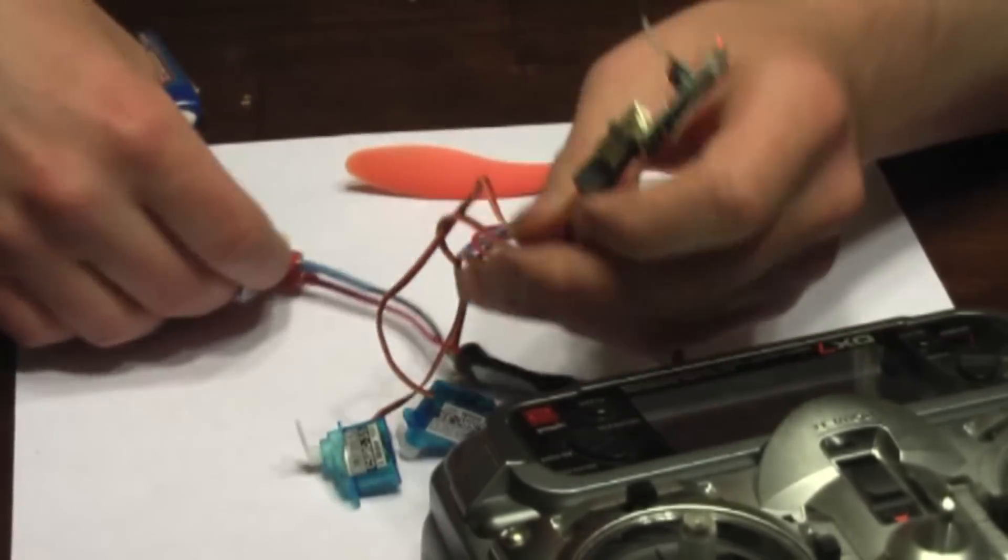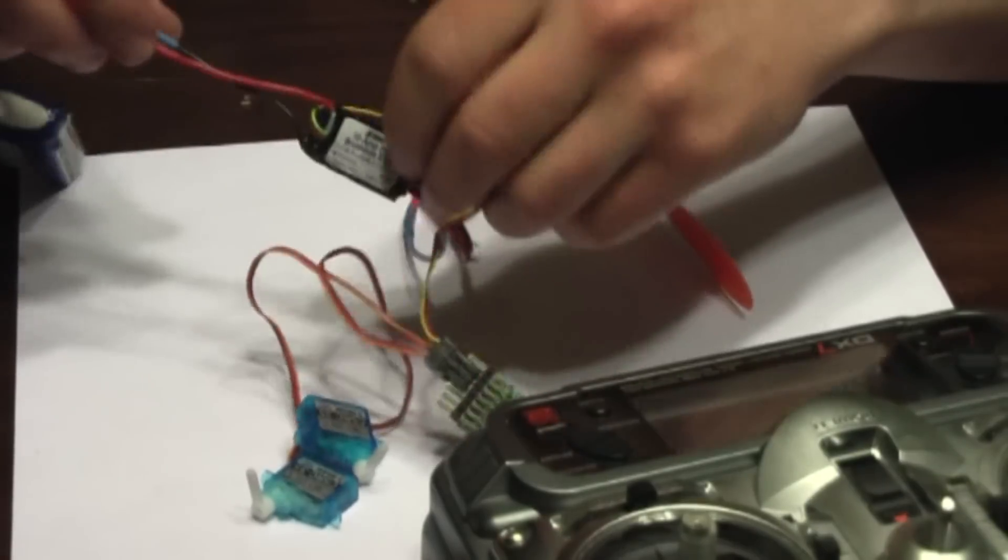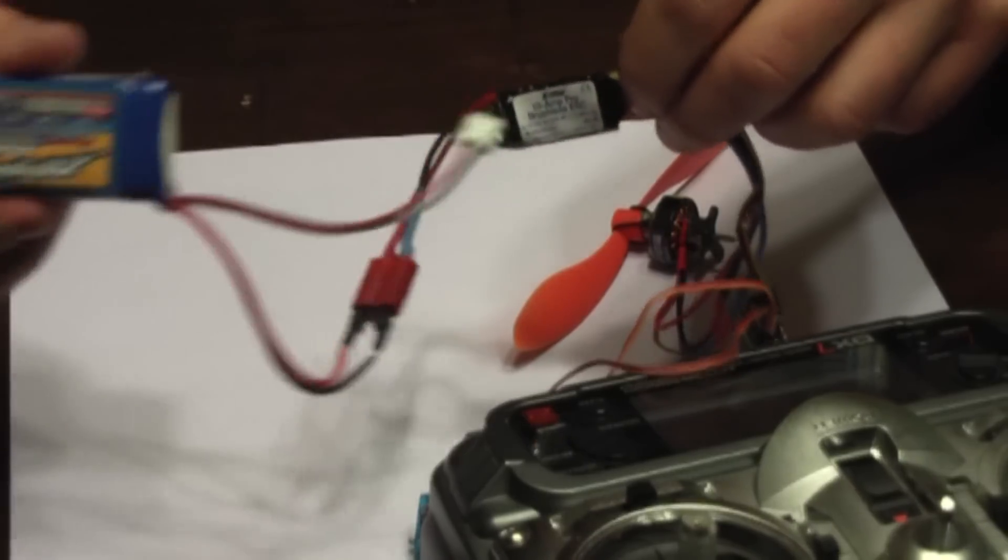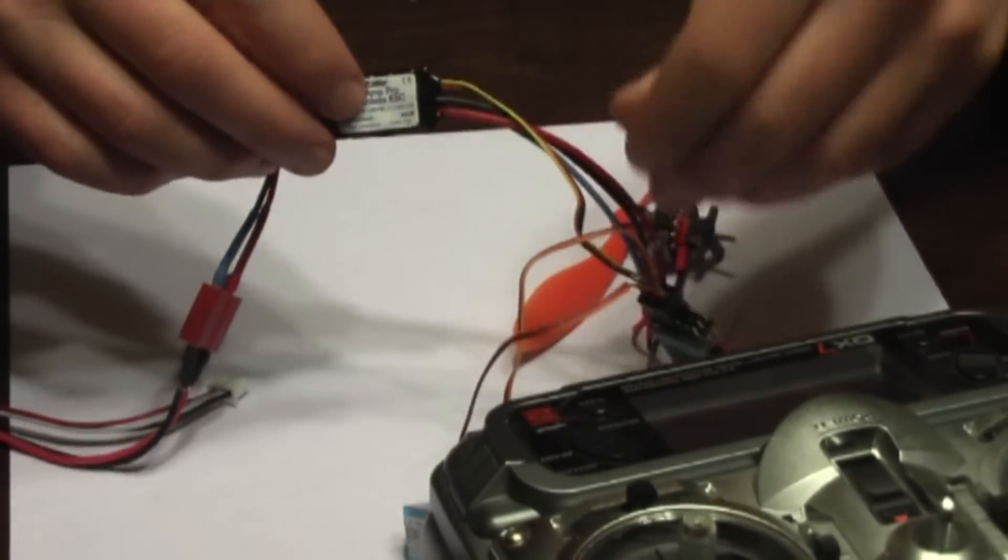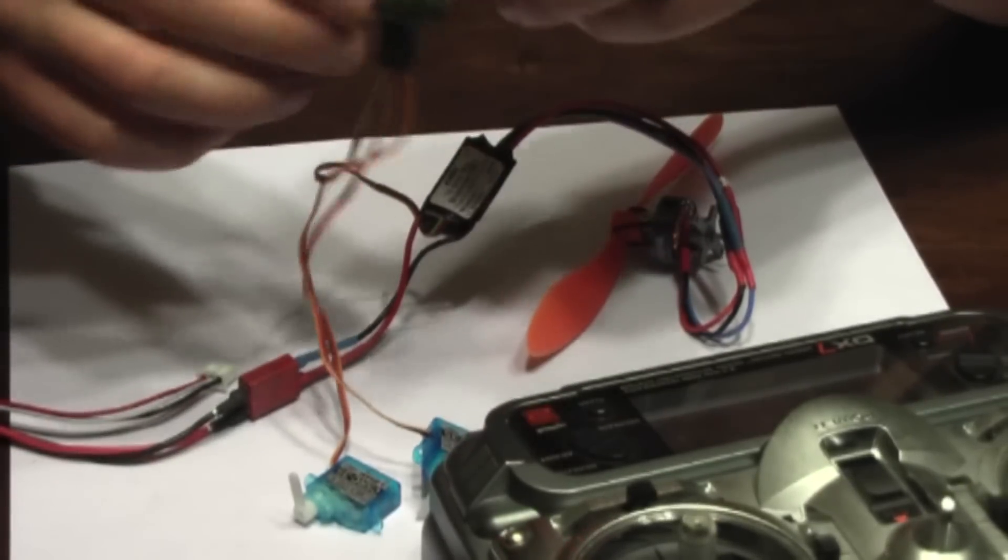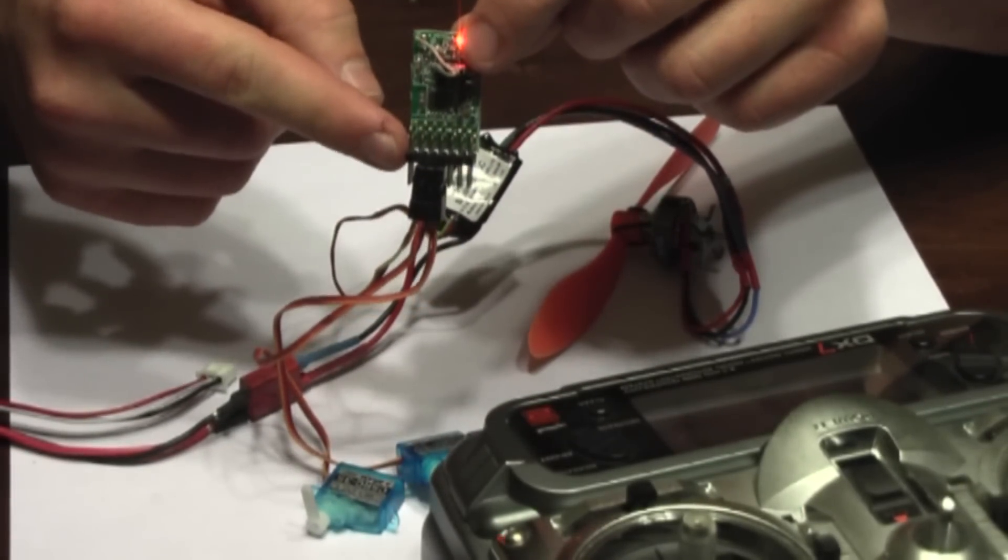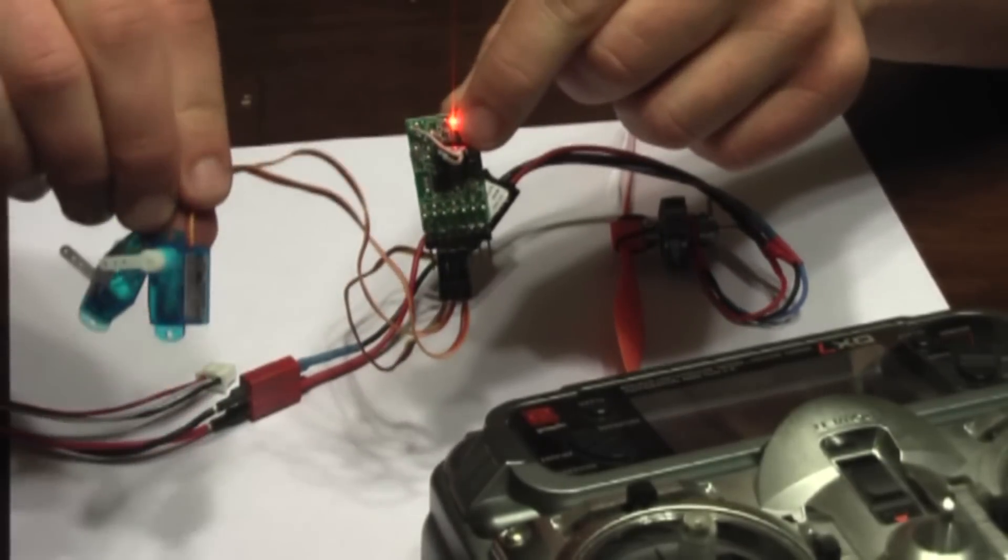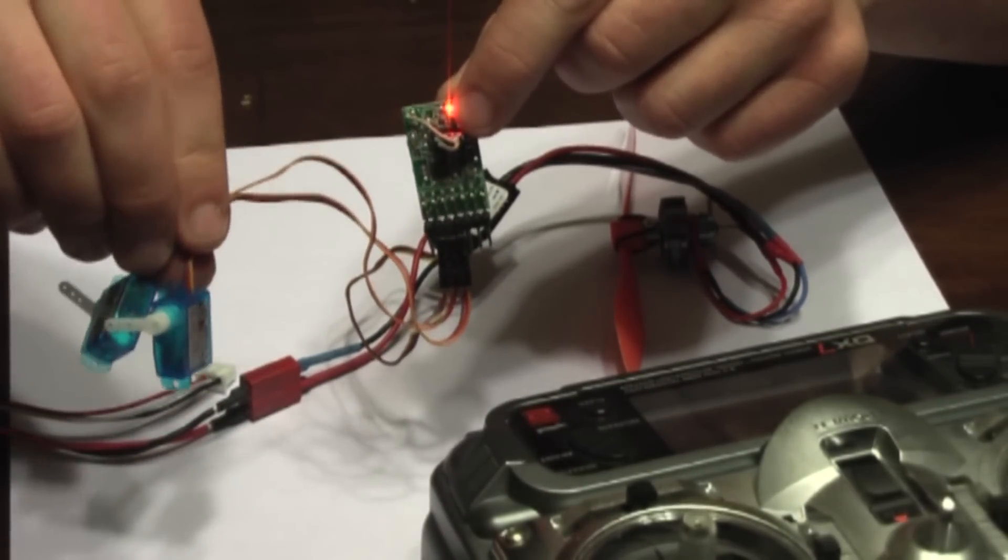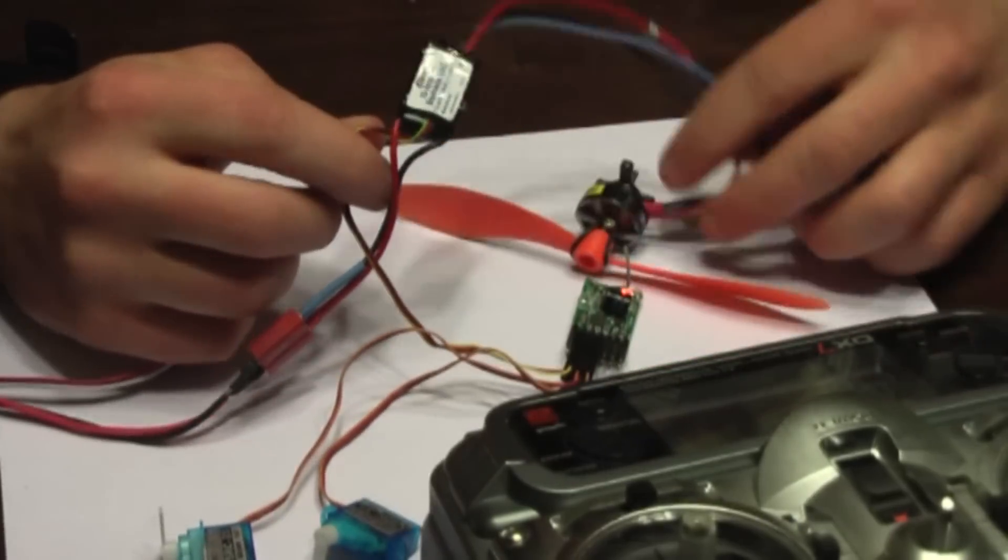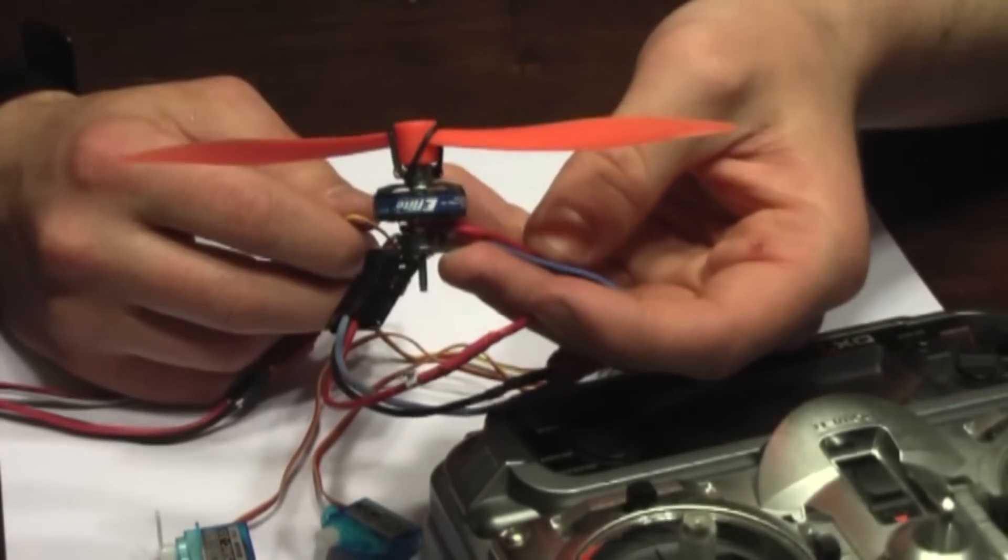But it's powering it through the ESC. So the battery voltage goes to the ESC, which is plugged into the throttle channel of the receiver, which is where the servos, the receiver is powering the servos. And then you go back to the ESC, that is powering the motor.